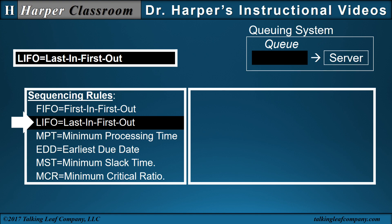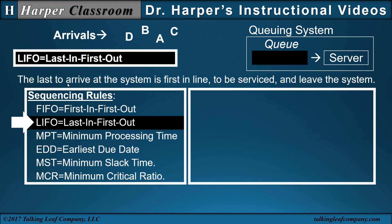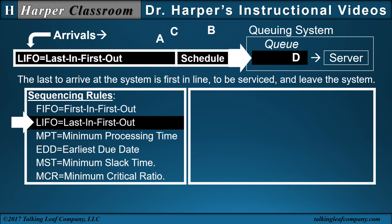Next, let's look at LIFO — last in, first out. The jobs arrive at the system C, A, B, and D, where job D is the last to arrive. The LIFO sequencing rule indicates the last to arrive at the system is the first in line, first to be serviced, and first to leave the system. So the jobs ordered by the LIFO sequencing rule will result in the schedule D, then B, then A, then C. That's the schedule according to the LIFO sequencing rule.